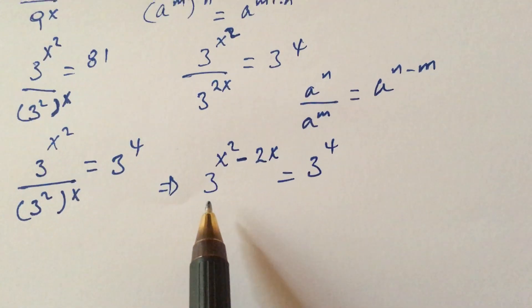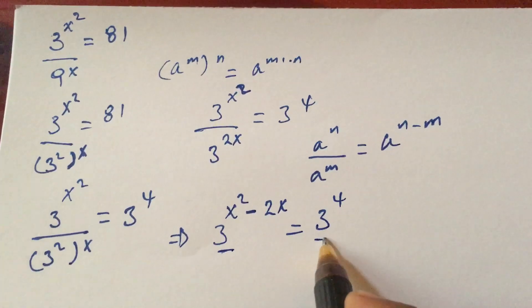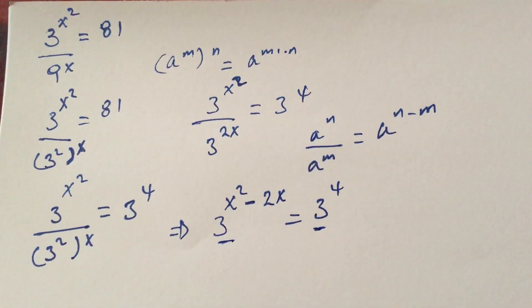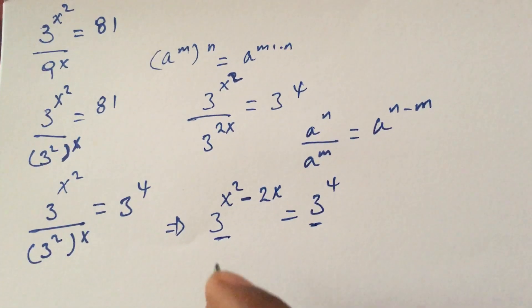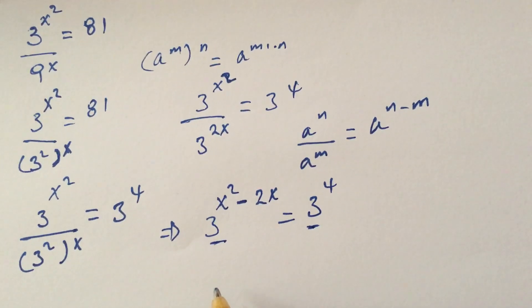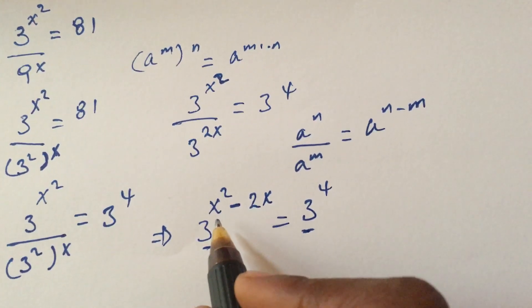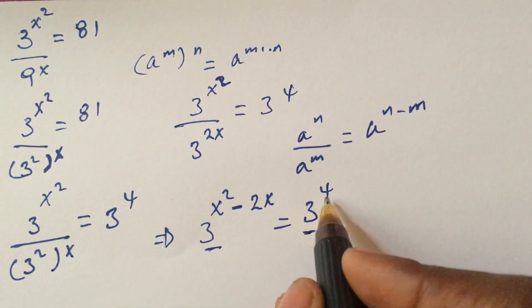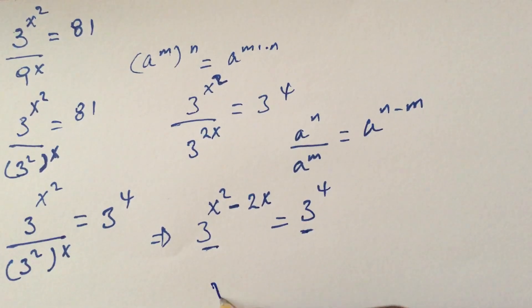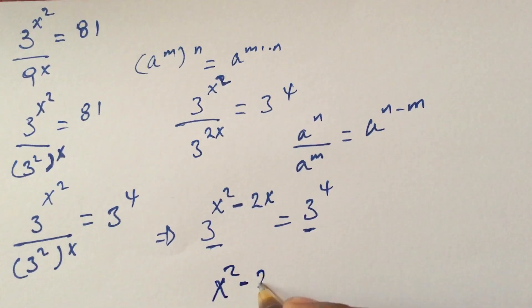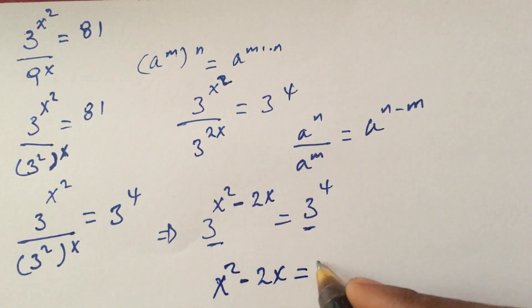Since both sides have the same base, 3, we can equate the powers. So x squared minus 2x equals 4.